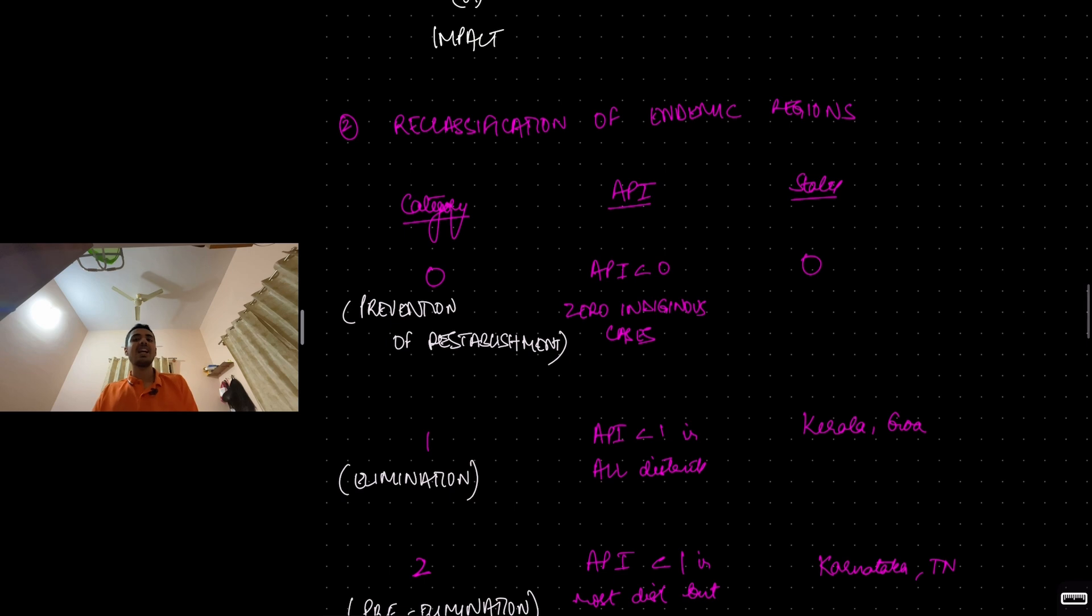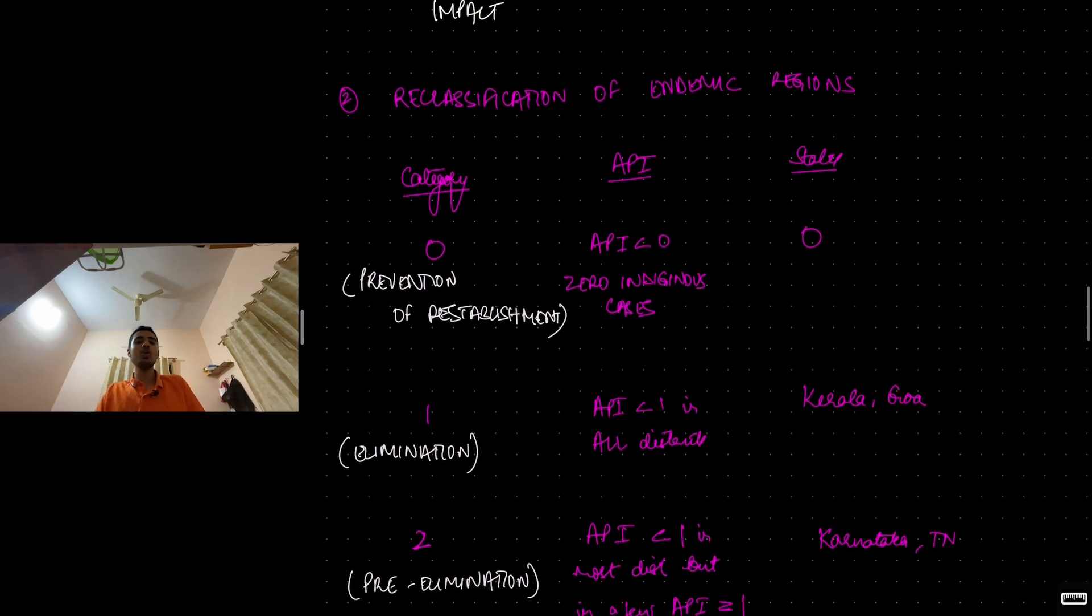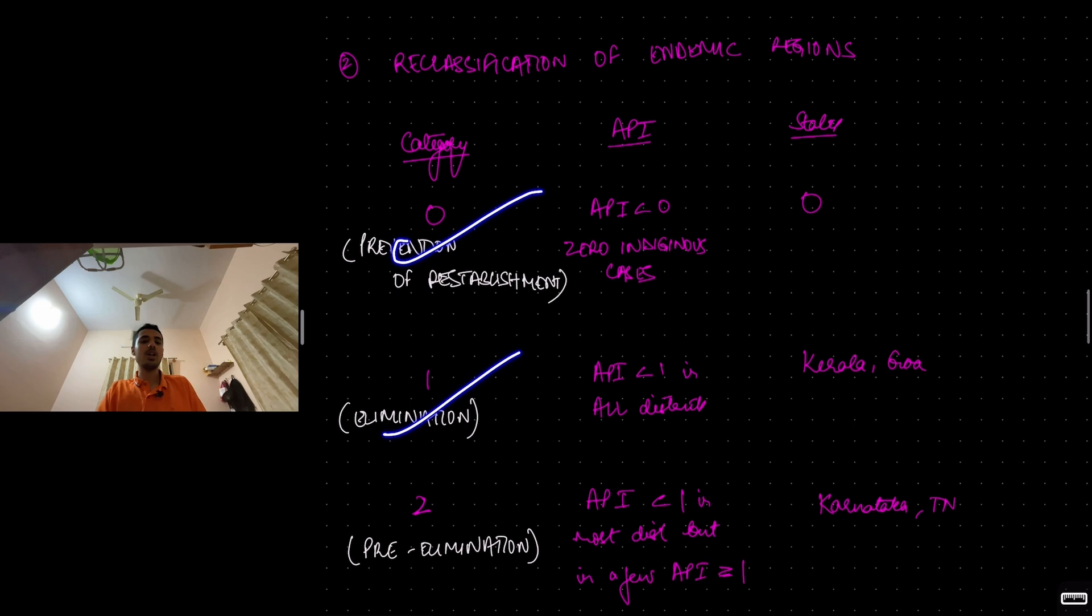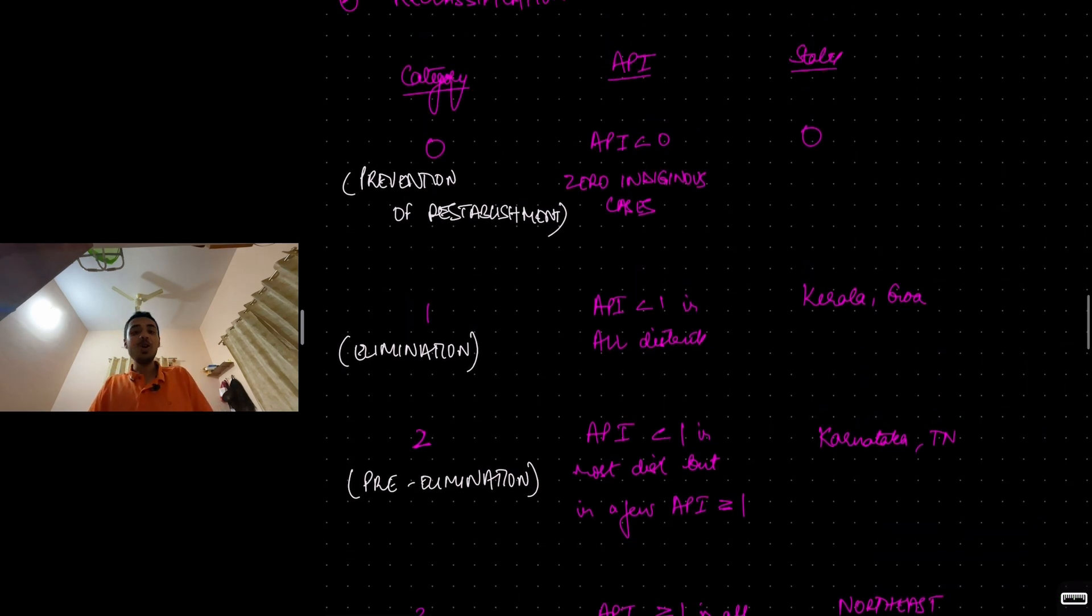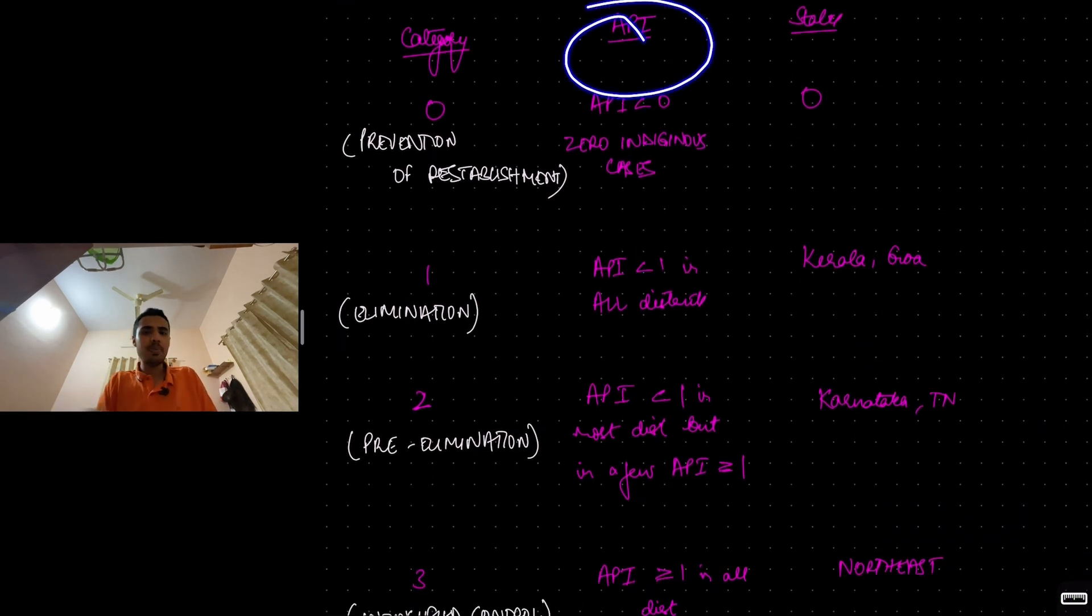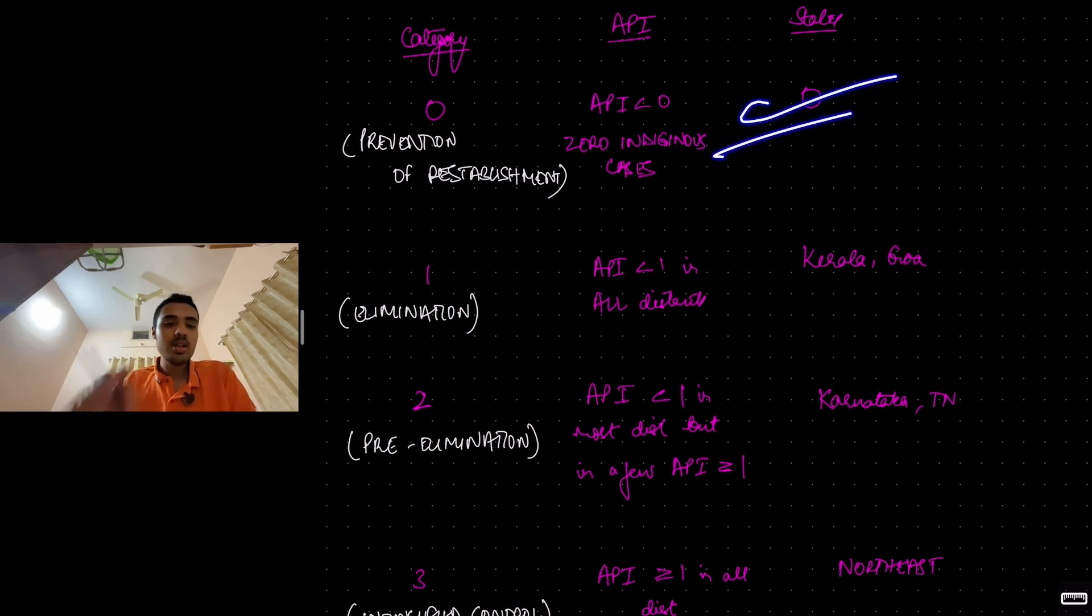Coming to second strategy. Endemic areas were reclassified into four categories. Category 0, category 1, category 2, and category 3. It is all based on annual parasite index. Category 0 is prevention of re-establishment. Malaria has been eliminated already. So if API, annual parasite index is equal to 0, that means 0 indigenous cases of malaria. Malaria has been eliminated. Is there any state in our country like that? Absolutely no. There is not a single state that is in category 0.